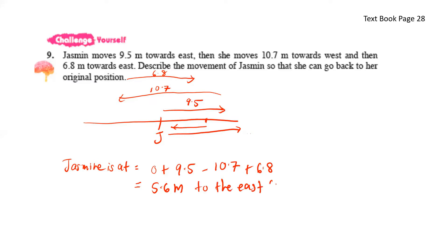She's 5.6 meters to the east. Which means she's on the right. So in order for her to move back to her original position, she has to move 5.6 meters back to the left. So Jasmine should move 5.6 meters to the west.